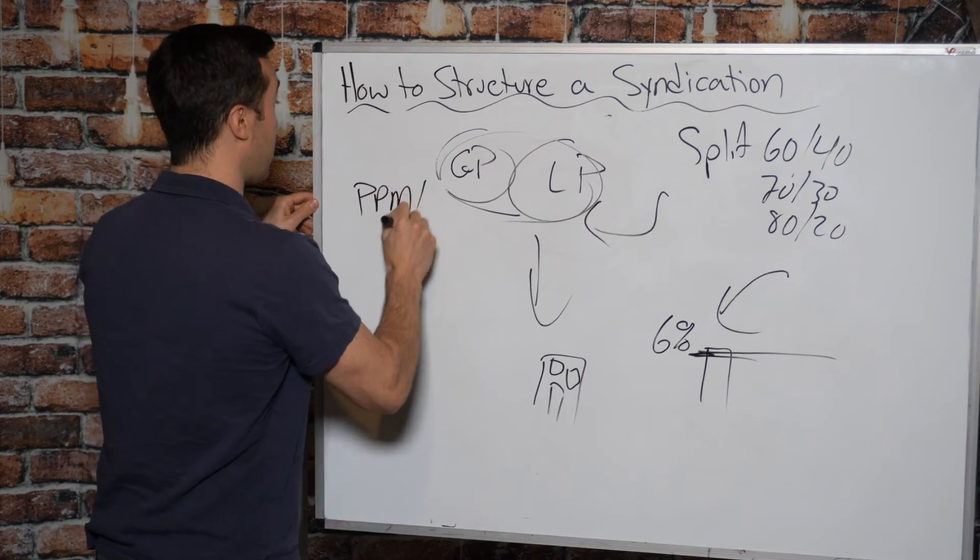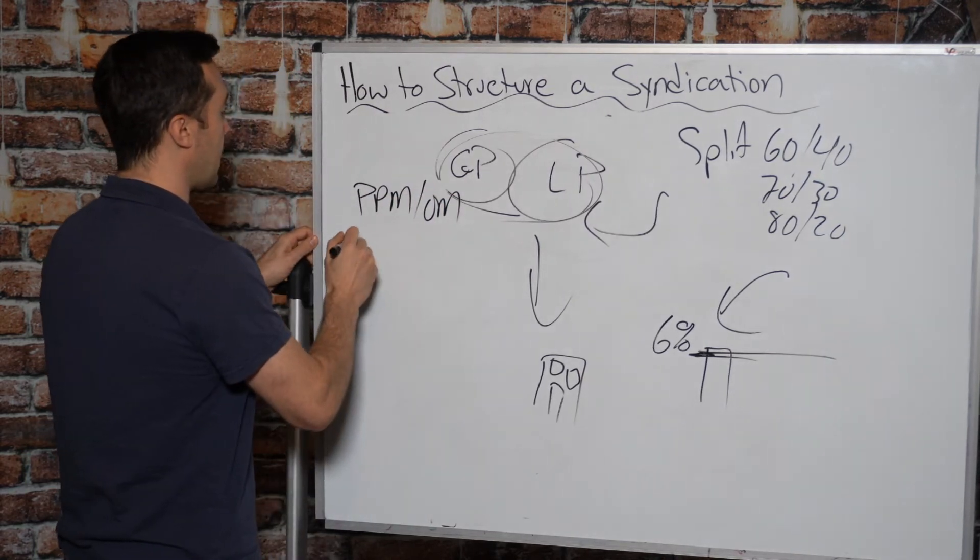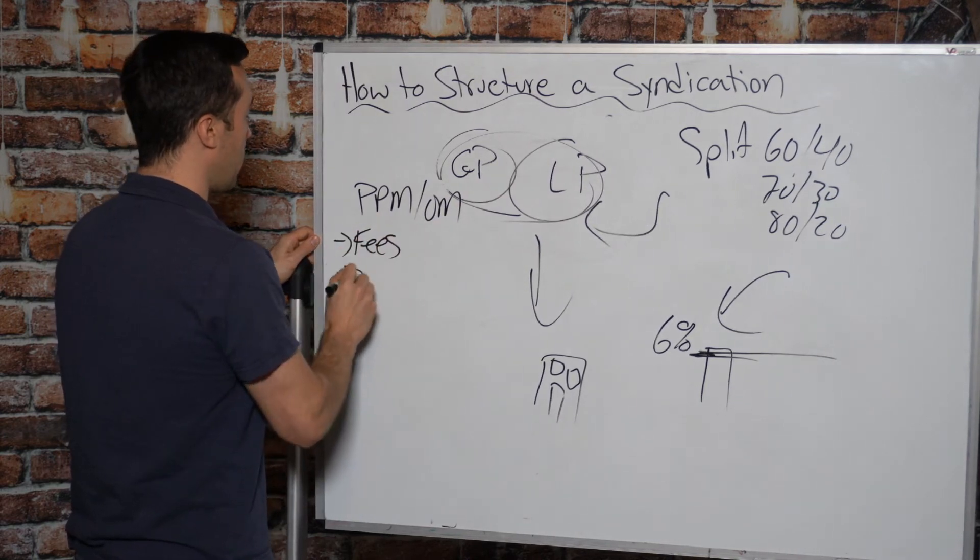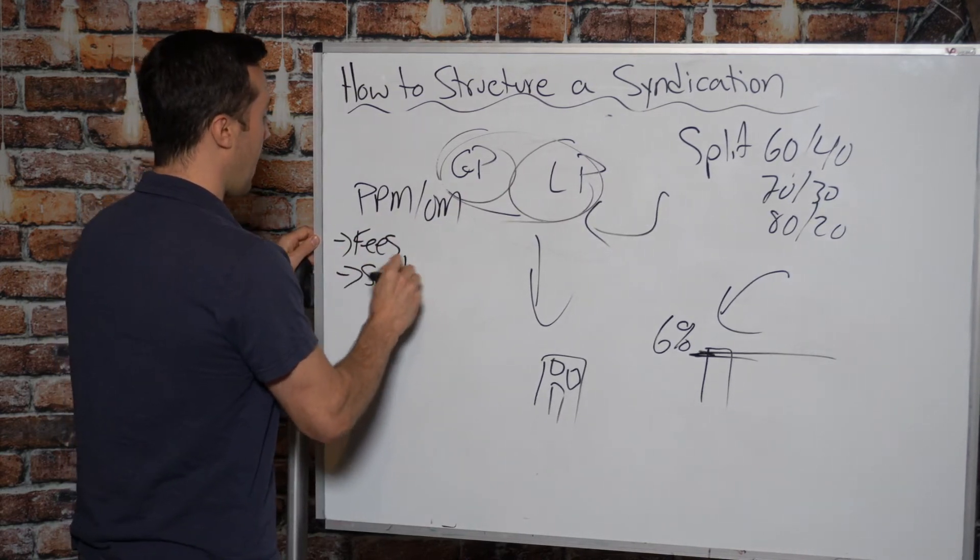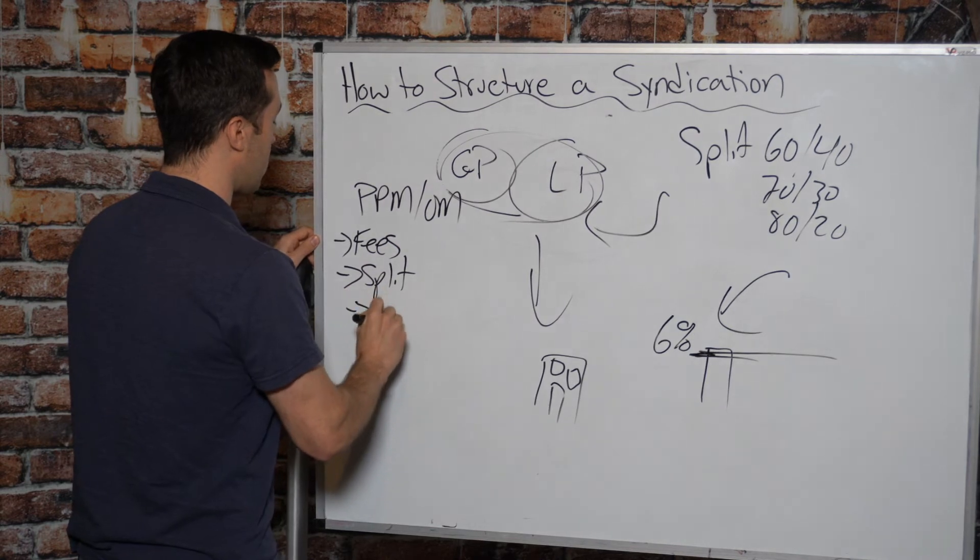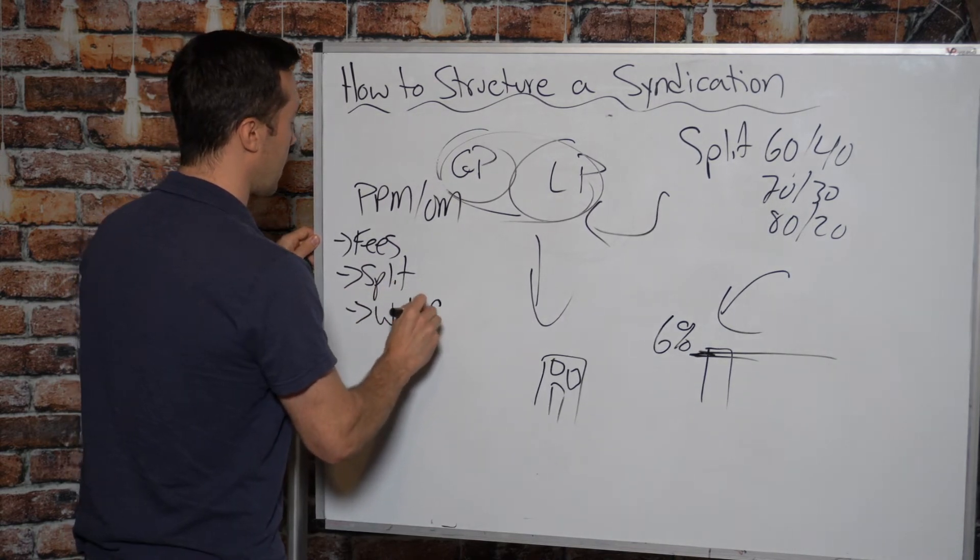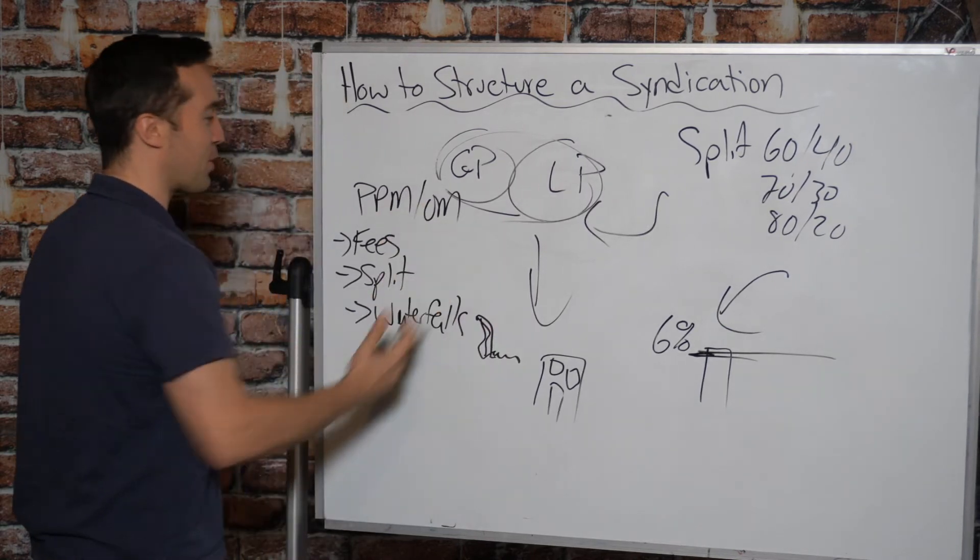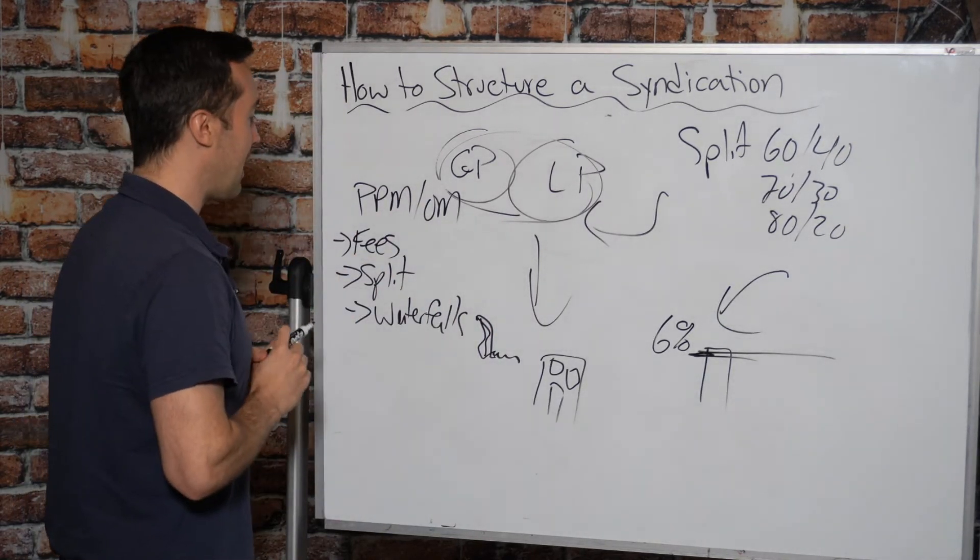So in your PPM or your OM, your private placement memorandum or your offering memorandum, you're going to lay out things like fees. Fees are one way that general partners get paid. You'll also lay out the split, any waterfalls or hurdles. I should have just drawn a picture of a waterfall. There we go.